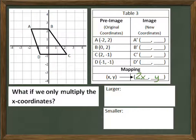So if I multiply all the x-coordinates of the original figure, the pre-image, by 2, I would get negative 4, 0, 4, and negative 2. The y-coordinates stay the same. We're only multiplying the x-coordinates. So I'll just keep those the same.